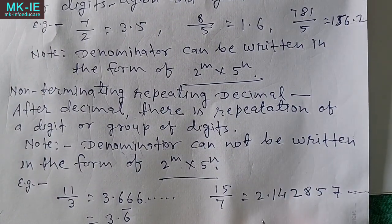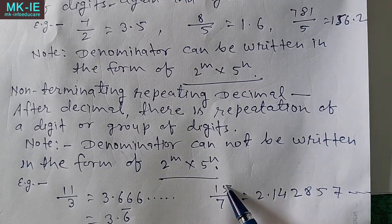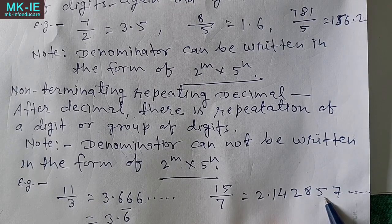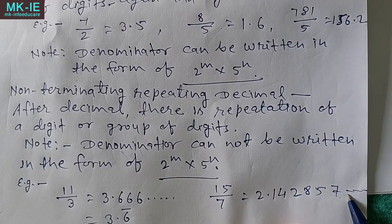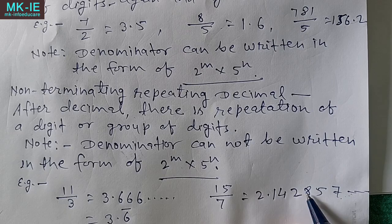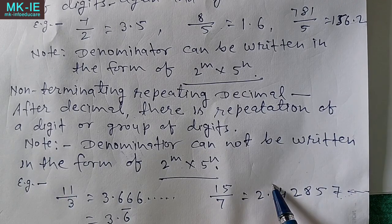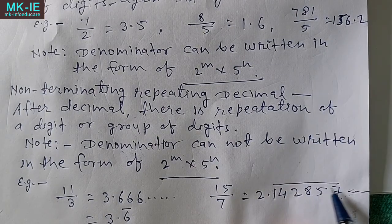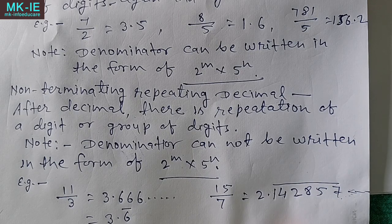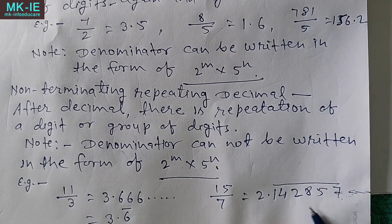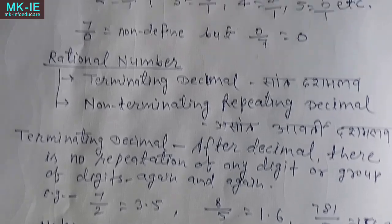अब 15 by 7 को जब हम decimal में convert करते हैं, 7 से divide करके 2.142857 आता है। 7 के बाद जो numbers हैं उनका repetition होता है — फिर 1 से repeat होता है: 1, 4, 2, 8, 5, 7। इस तरह से यहाँ पर 6 digits का repetition हो रहा है। इन 6 digits पर हम bar लगा देंगे, मतलब इनका बार-बार repetition होता रहता है।